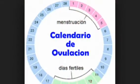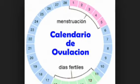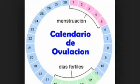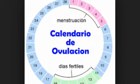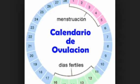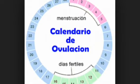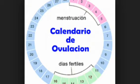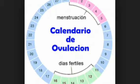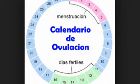En este calendario de ovulación os voy a enseñar cuál será nuestra fase menstrual, que empezará el primer día del ciclo y acabará el último día de menstruación. También os enseña cuáles serán los días previos a la ovulación, los más fértiles y los dos últimos, siempre para un ciclo de 28 días.